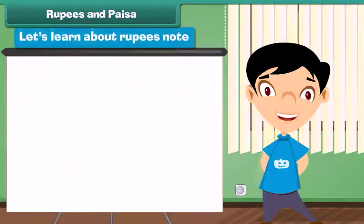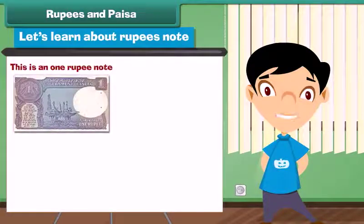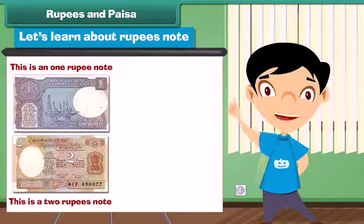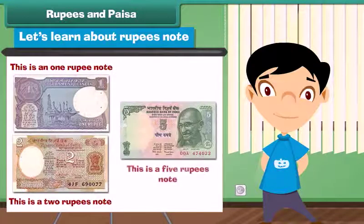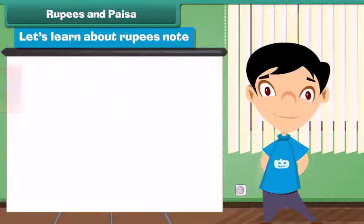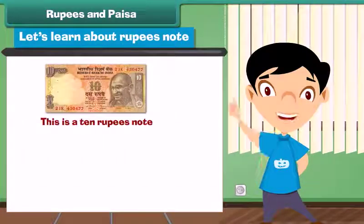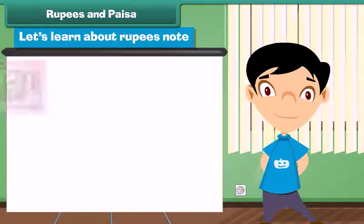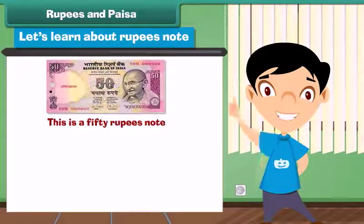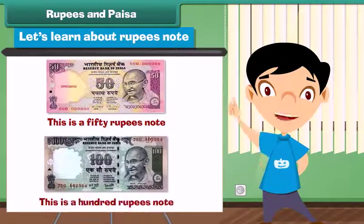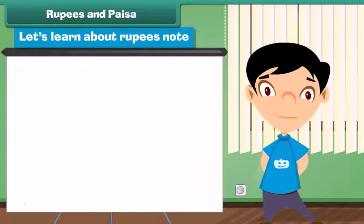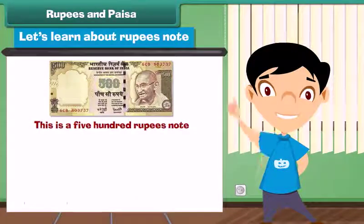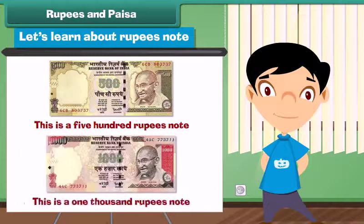Let's learn about rupee notes. This is a 1 rupee note. This is a 2 rupees note. This is a 5 rupees note. This is a 10 rupees note. This is a 20 rupees note. This is a 100 rupees note. This is a 500 rupees note. And this is a 1,000 rupees note.